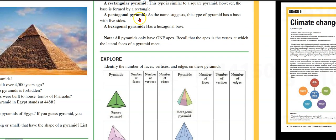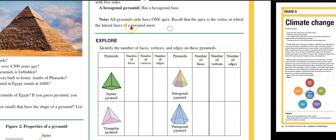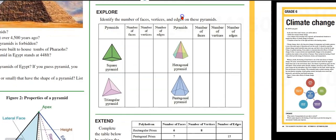A pentagonal pyramid. As the name suggests, this type of pyramid has a base with five sides. A hexagonal pyramid has a hexagonal base. All pyramids have one apex. This is important to distinguish between pyramids and prisms. All pyramids have one apex. Recall that the apex is the vertex at which the lateral faces of a pyramid meet.